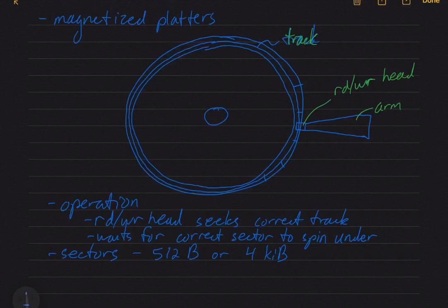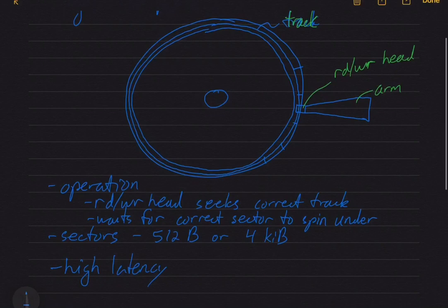So this process, because we've got moving parts here, hard disks are pretty, they have a high latency. So it can take somewhere between 5 to 10 milliseconds for the arm to seek to the correct track and for the correct sector to spin under the read write head. So hard disk drives have high latency. So I'm going to say, you know, in the neighborhood of 10 milliseconds, but they have high bandwidth.